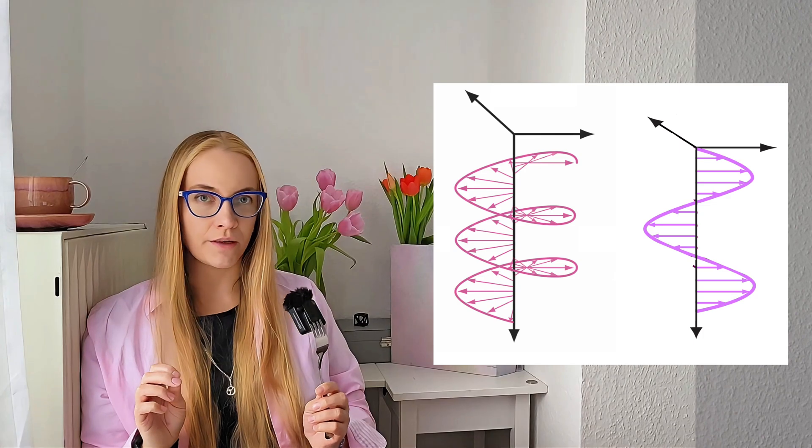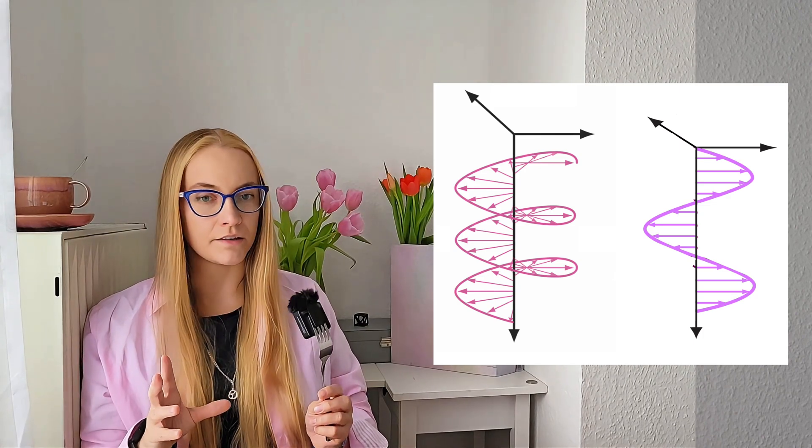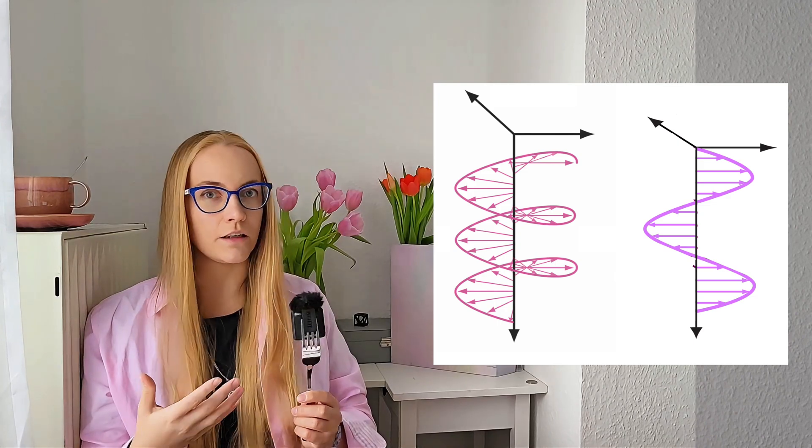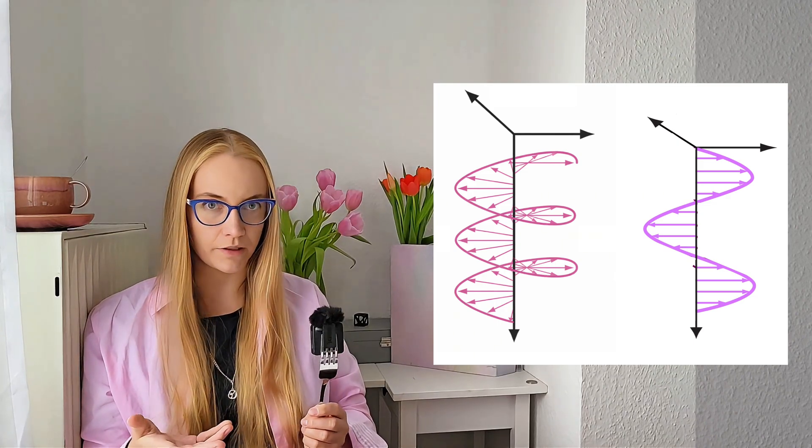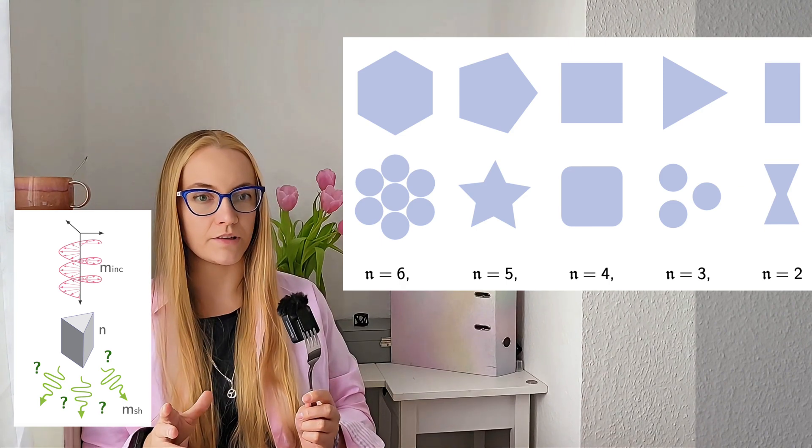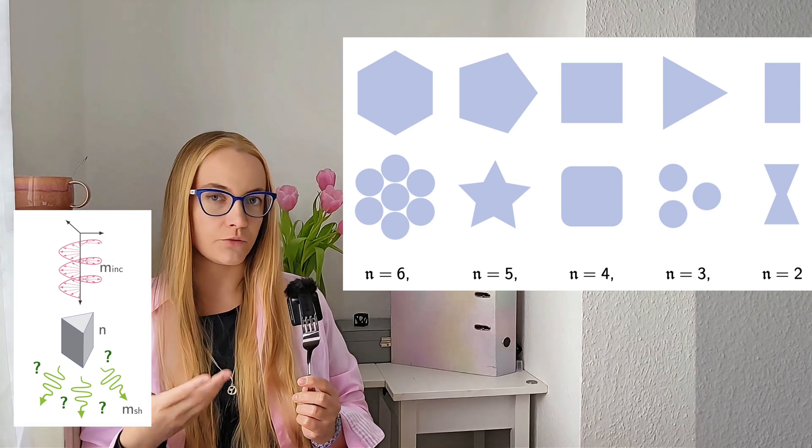Note that a linearly polarized plane wave has a certain parity under reflection. For example, it can be even in the screen plane and odd in the perpendicular plane. We assume that the nanostructure has rotational symmetry with respect to the z-axis. This symmetry is denoted by n.